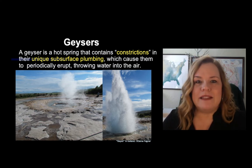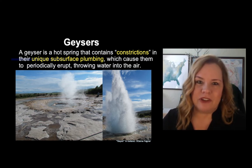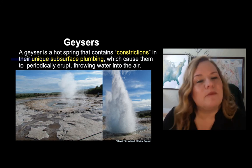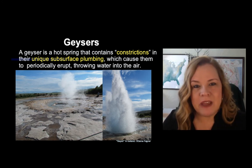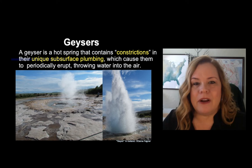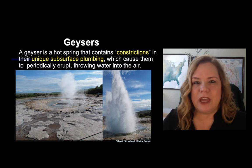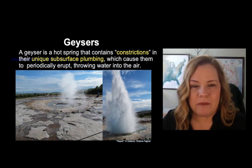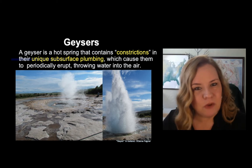For example, if you have the water but not the constriction and you have the heat, that could produce something like a hot spring. If you get water and heat but no constriction, you might get a mud pot. If you get virtually no water but you have the heat, you're going to get something like a fumarole.